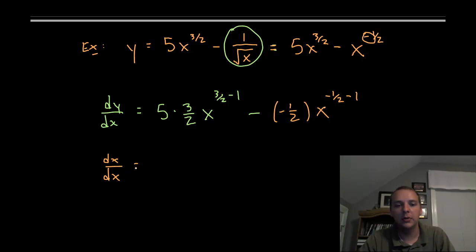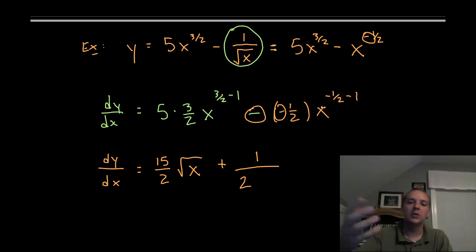Let's clean that up a little bit. Clean that up a little bit. dy dx equals 15 over 2, that's 5 times 3 over 2, 15 over 2 x to the 1 half, that's 3 halves minus 1, so I could say square root of x or x to the 1 half, minus a negative makes a plus 1 over, here's a 2 and this will be x to the negative 3 halves, negative 1 half minus 1, negative 3 halves. So I'll move that down to the denominator and write it as x to the positive 3 halves. So you can either write this term in radical notation or we'll just leave it as a rational exponent.